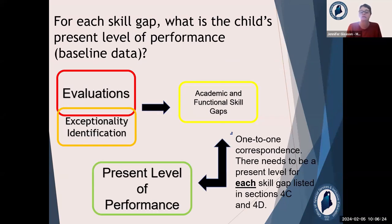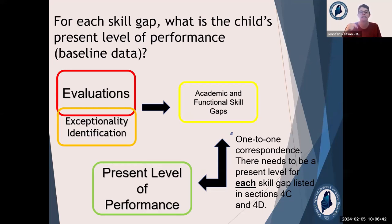A little bit about alignment. You want to make sure that each gap listed in Section 4C, 4D, and 4E has a present level of performance. We have a module on gaps as well, but we highly recommend just bulleting those gaps out. Then you'll know that you have a present level and a goal for each gap.